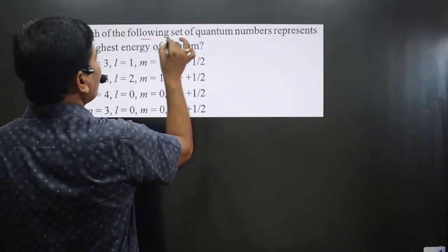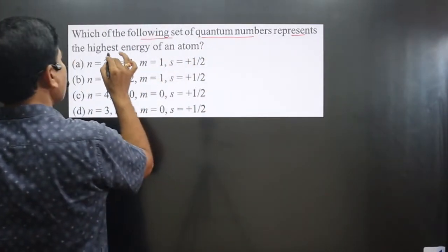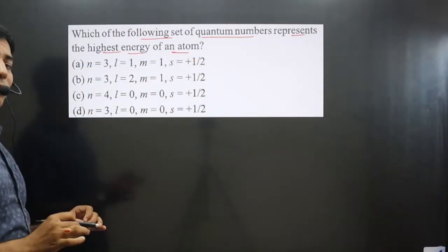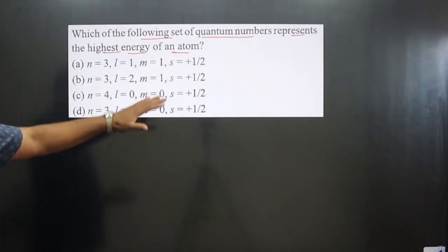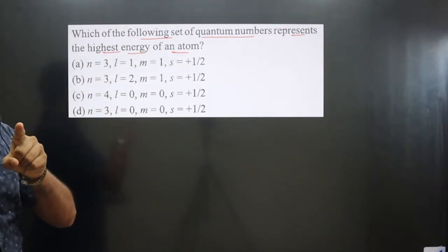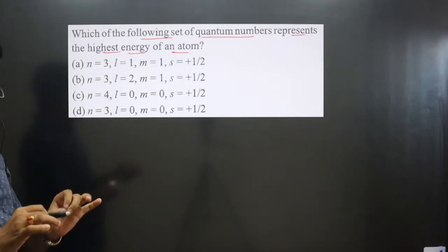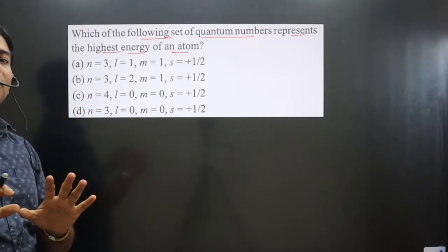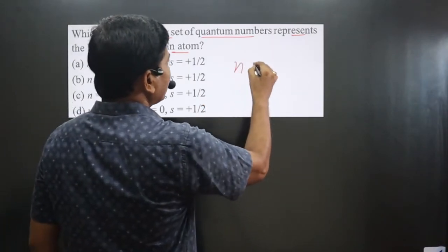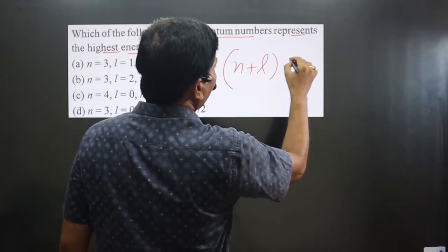The question asks which of the following sets of quantum numbers represents the highest energy of an atom. Among the given four sets of quantum numbers, we have to determine which has the highest energy. Whenever there is a comparison between the energy of sets of quantum numbers, always use the n plus l rule.